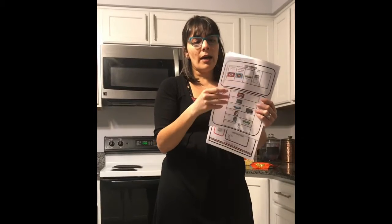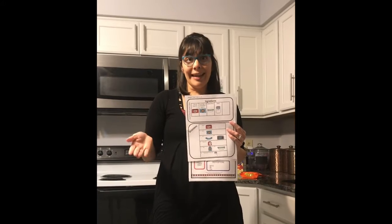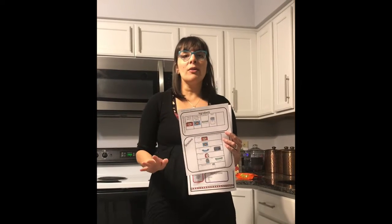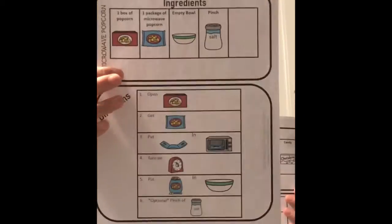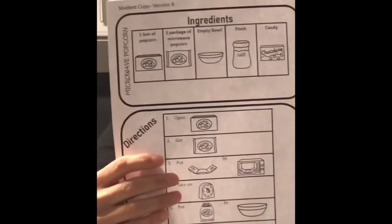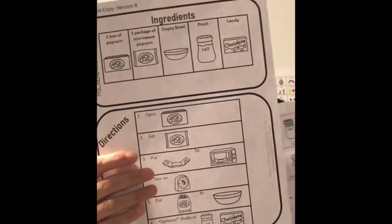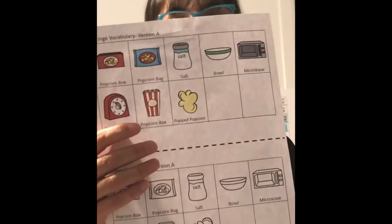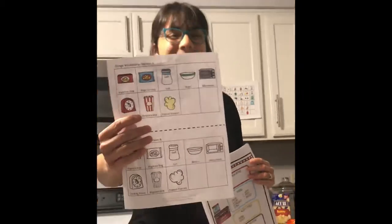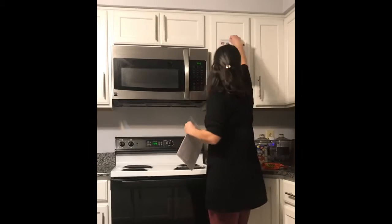Next up we have the ingredients. I did two different versions of making popcorn: one includes candy and one does not. I did that because if you don't want to use candy, I don't want your students hassling you when they see it in the ingredients. As always, they come in color and black and white. The fringe vocabulary sheet for this one is without candy — make sure you print the right one. Let's go ahead and get started and make some popcorn!